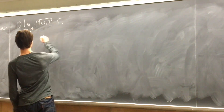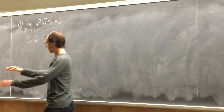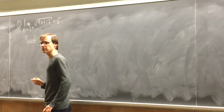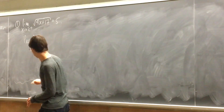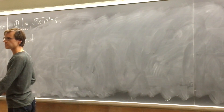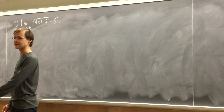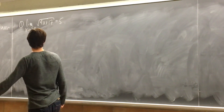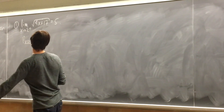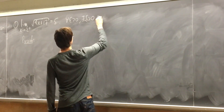Let's do the proof. So how should any limit proof begin? With our three let-statements, right? Let's write down the definition first, and then we'll write down the let-statements. In order to prove a statement like this, what we want to show is that for all epsilon greater than zero, there exists a delta greater than zero, such that...